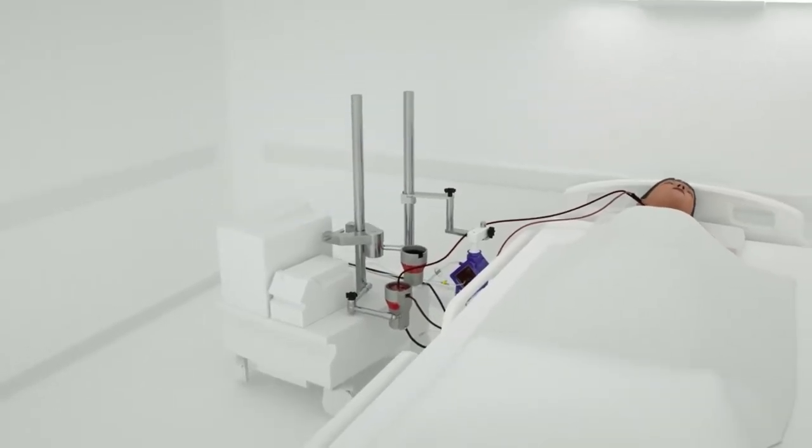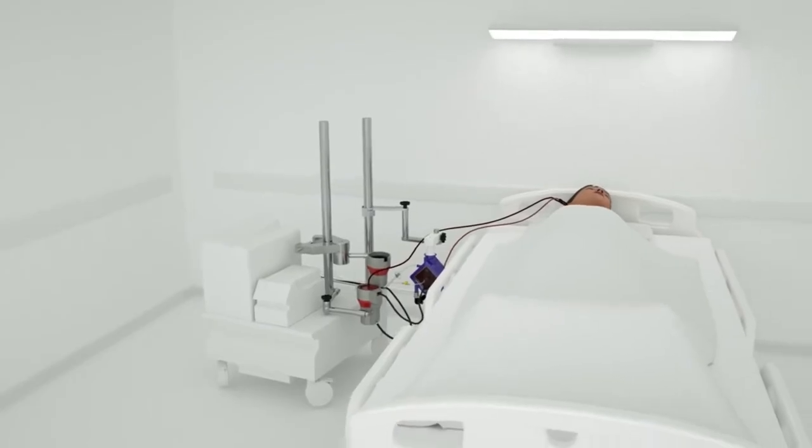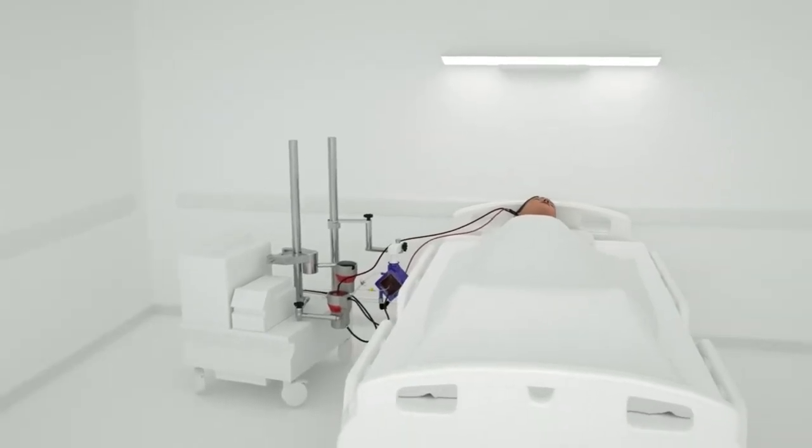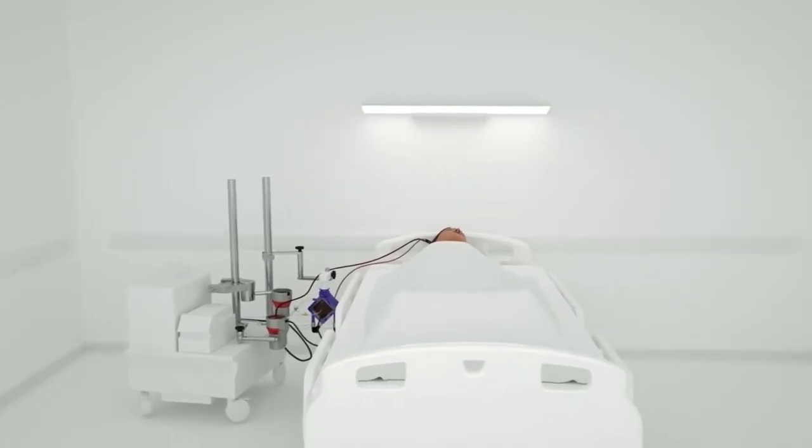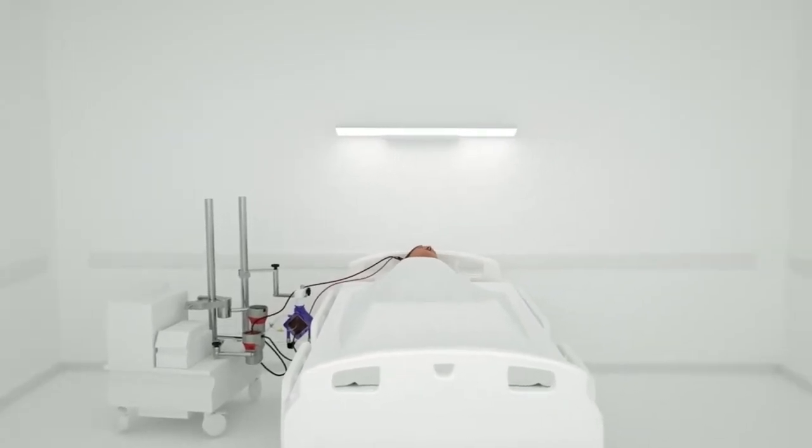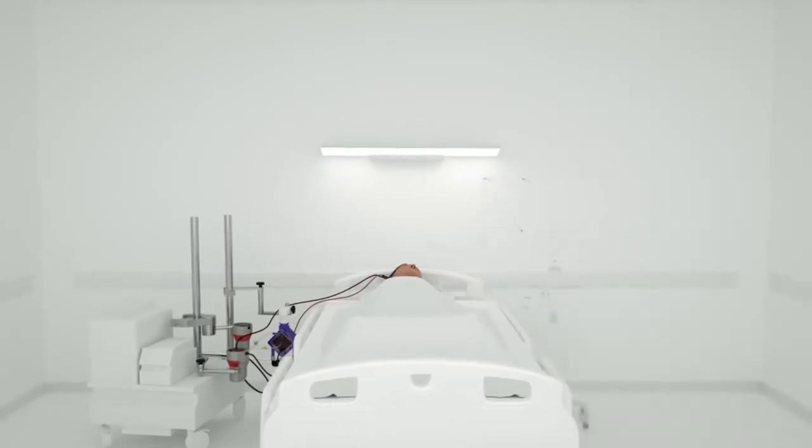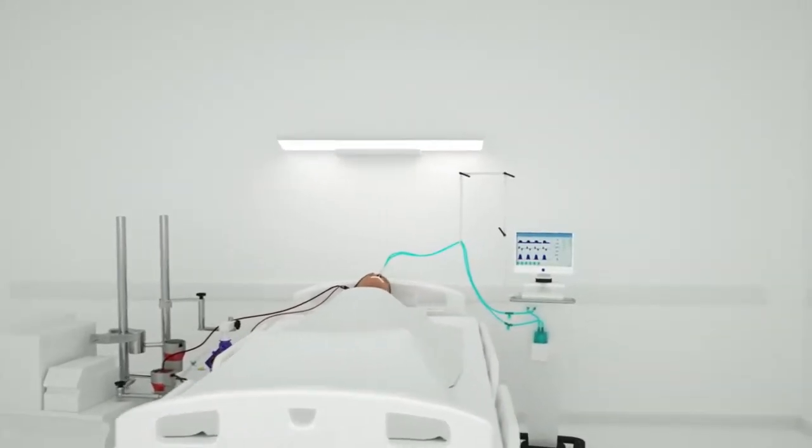There are two types of ECMO. The VA ECMO is connected to both a vein and an artery, and it is used when there are problems with both the heart and lungs. The VV ECMO is connected to one or more veins, usually near the heart, and is used when the problem is only in the lungs.